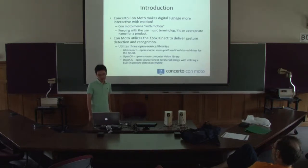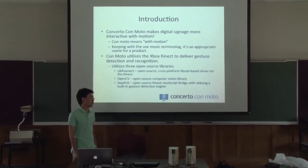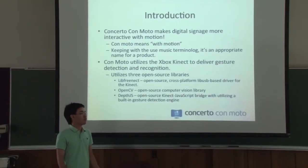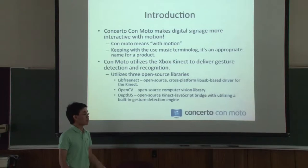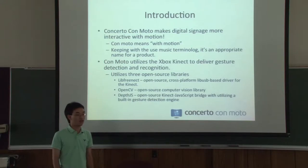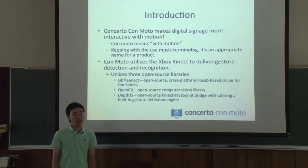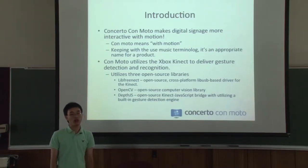Currently it uses free open source libraries. One is called LibFreeMect, which allows software to interact with the Kinect hardware — it grabs a three-dimensional image from the Kinect and sends it to a program. And OpenCV, which is an open source computer vision library used to do some higher-level logic with the data from LibFreeMect. And DefJS, which applies some gesture recognition algorithms to recognize hand gestures and send events to JavaScript code in a web page.